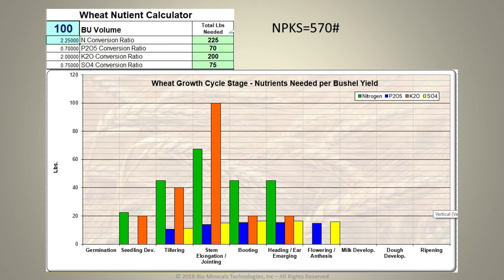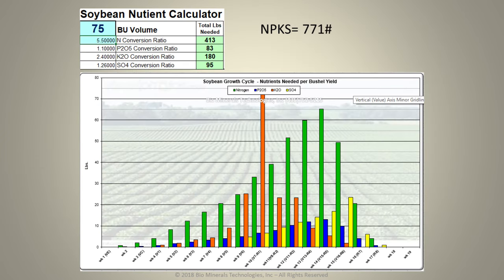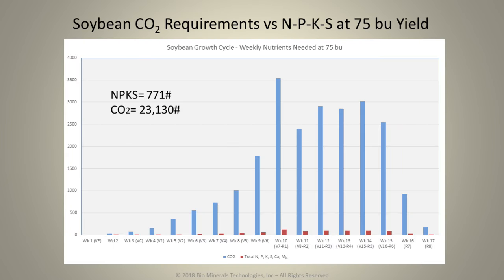Wheat — 100-bushel wheat — requires 570 pounds of nitrogen, phosphate, potassium, and sulfur, and these are the growth stages when it is going to come into the plant. Look at the CO2 requirements for that 100 bushels of wheat: over 17,000 pounds of carbon dioxide. A 75-bushel soybean crop will require 771 pounds of NPK and S. Now look at the 23,000 pounds of carbon dioxide that have to come into the plant along with the mineral ratios. The carbon dioxide contribution of a plant is a staggering amount of nutrition to be completely unaware of and not manage for in our plant production.